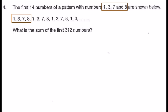So now, these 312 numbers, because it's made of groups of 4 numbers, and that will be 1, 3, 7, and 8.